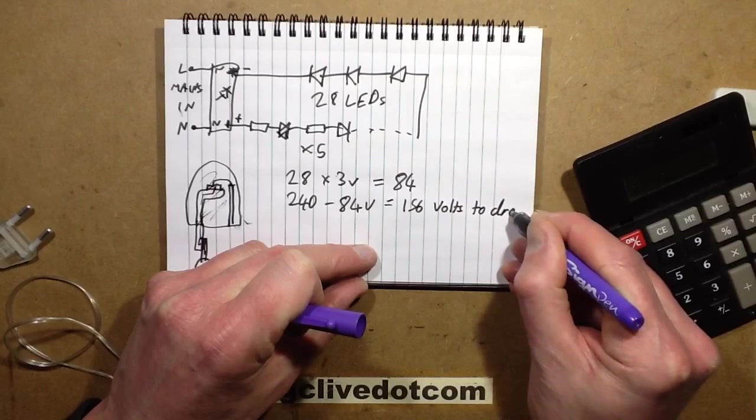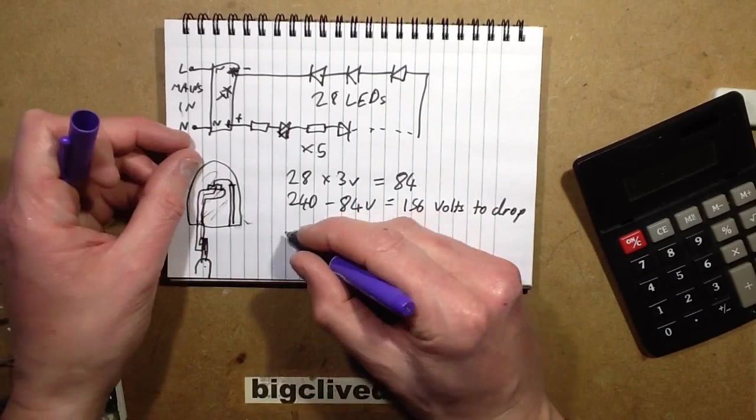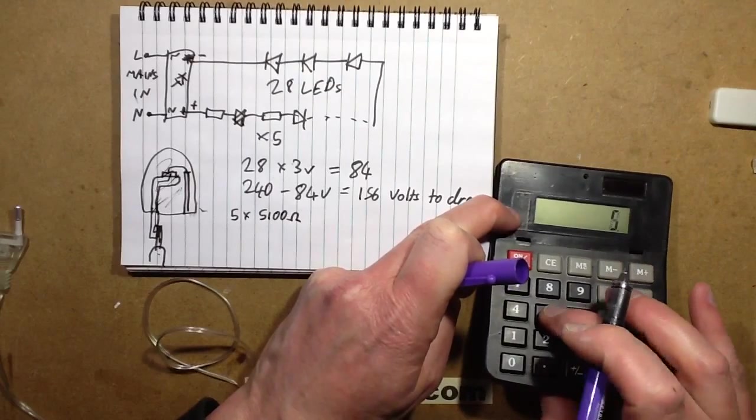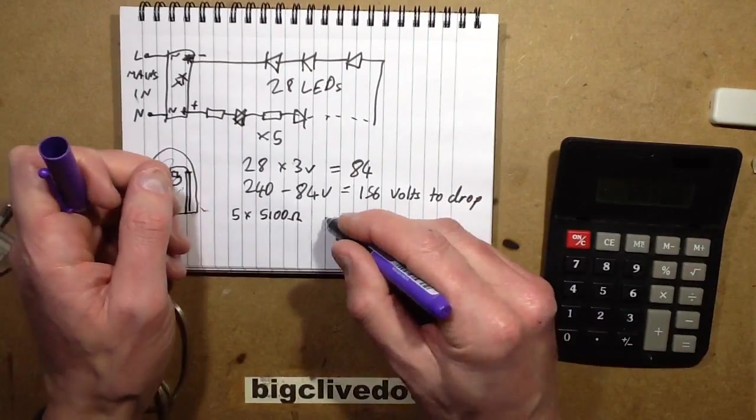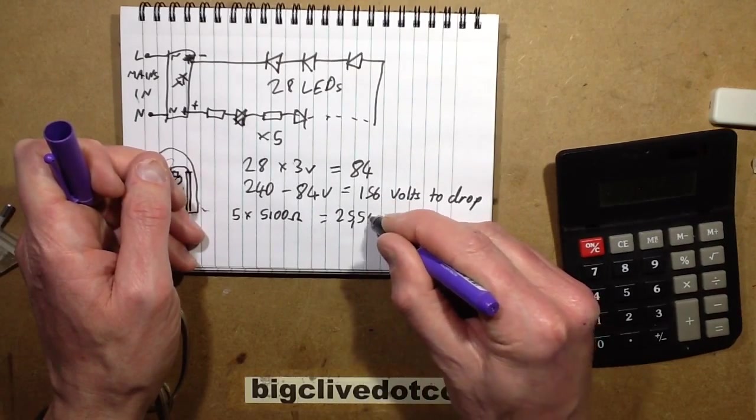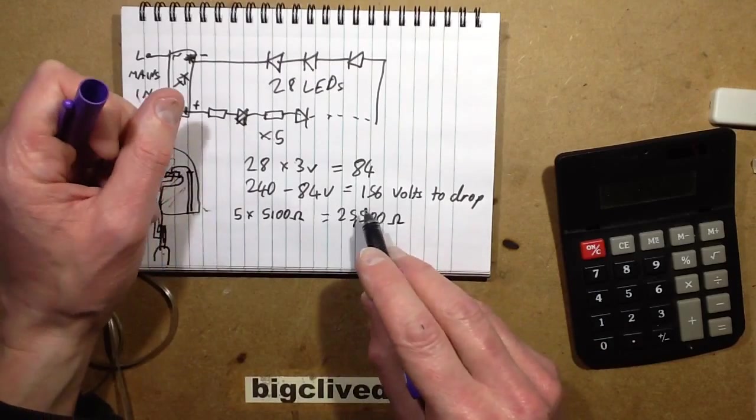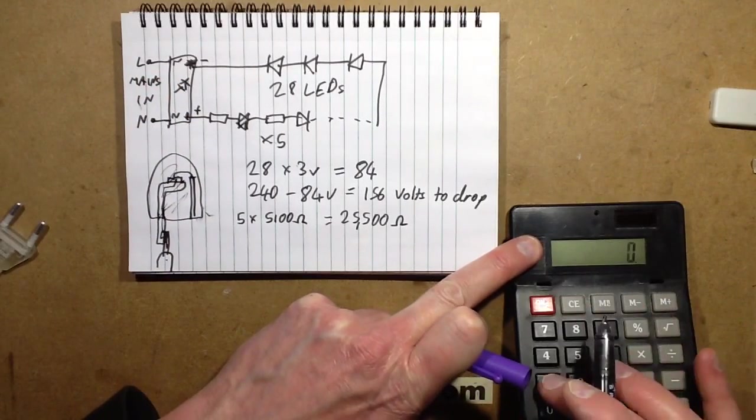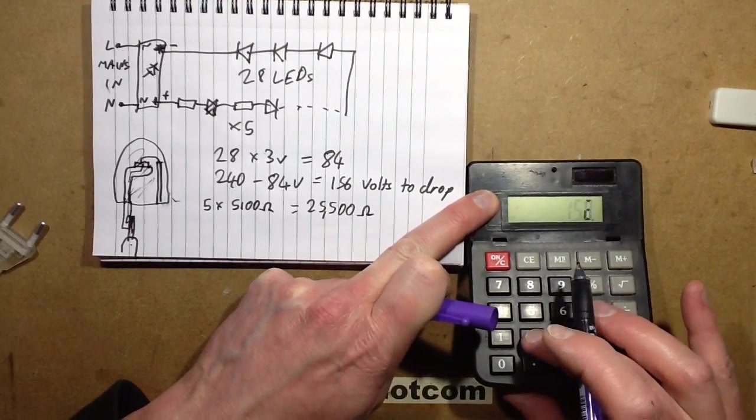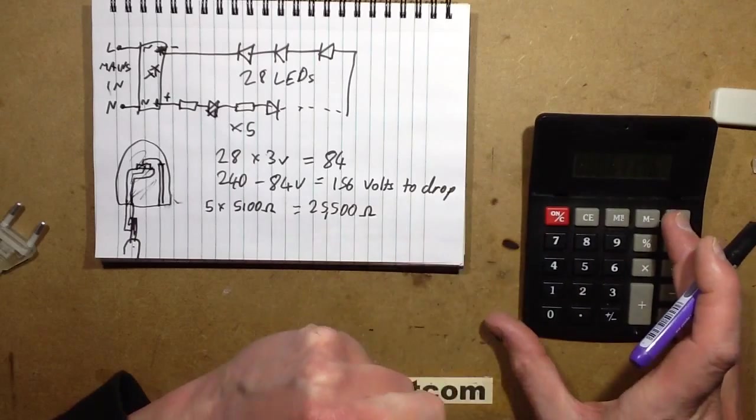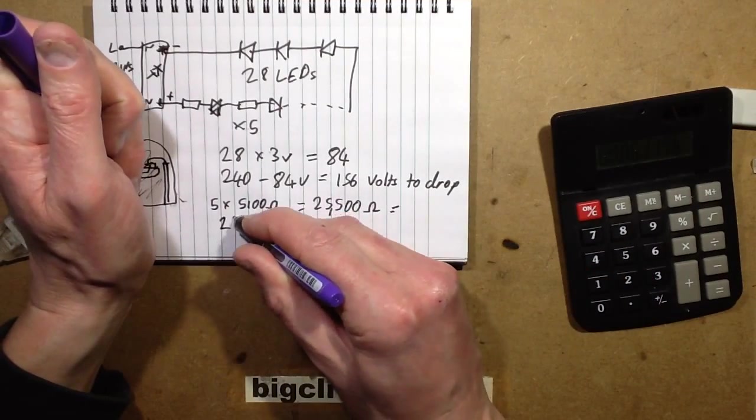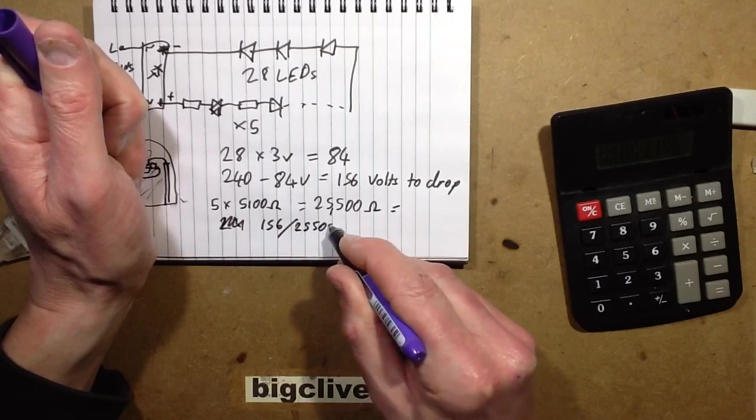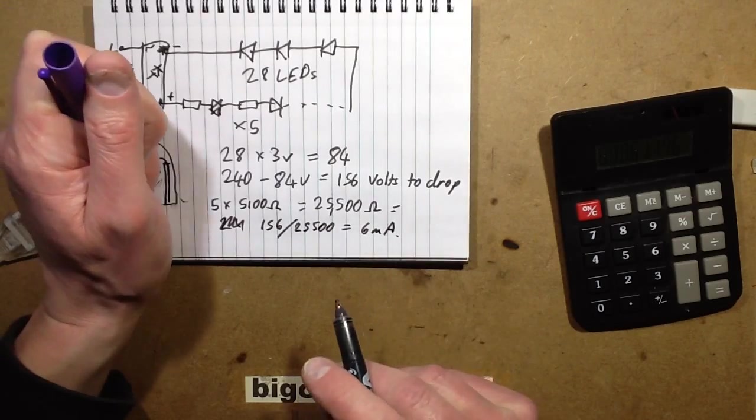156 volts to drop. And that's done across the resistors. So the resistors, we have the five times 5,100 ohm, which was 5 times 5,100 ohms equals 25,500 ohms. And if they then work it out, so the voltage 156 volts has been dropped across these, so that would be 156 divided by that—156 volts divided by the 25,500 ohms equals 6 milliamps. So that's 240—oh no, that's wrong. It's 156 divided by the 25,500 ohms equals 6 milliamps. And that's what we're getting through this string.